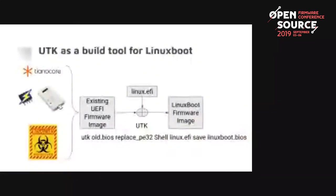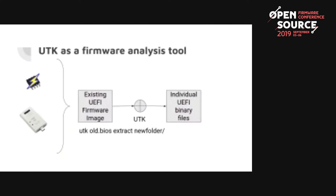UTK is the tool; Fiano is the library. We use UTK as a build tool for LinuxBoot: we take the existing ROM image, read it out with FlashROM, and add the Linux EFI binary using UTK. In this case we replace the shell, because the shell is usually not load-bearing — it's just a diagnostic debug tool. For firmware analysis, we read out the entire image, extract it to a folder, and UTK dumps every binary into that folder with a JSON file at the top describing the whole structure.